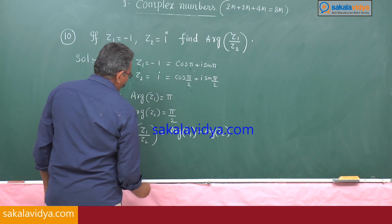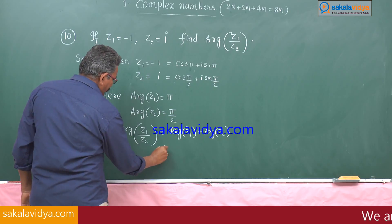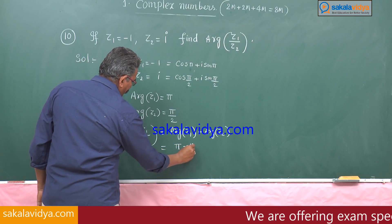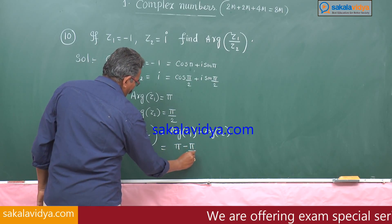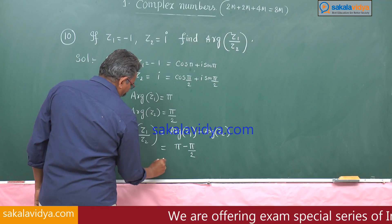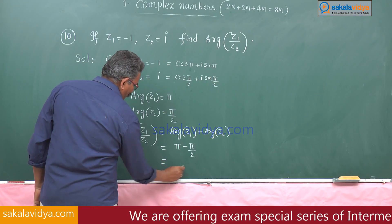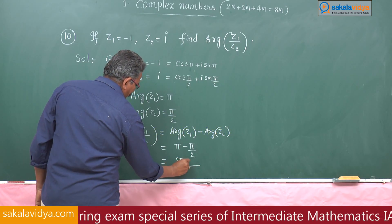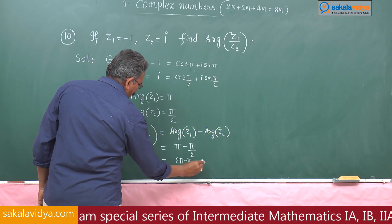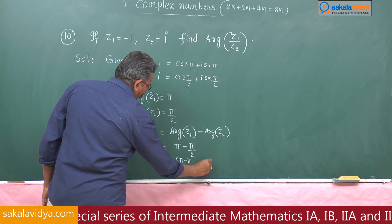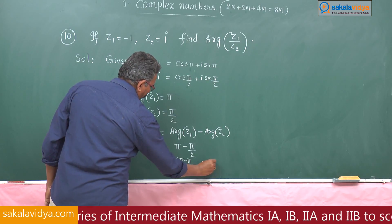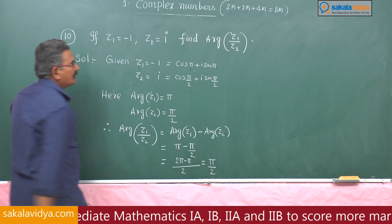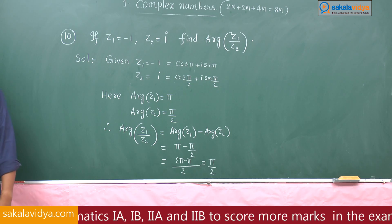So arg(z₁ / z₂) equals pi minus pi by 2, which equals pi by 2. That completes this problem.